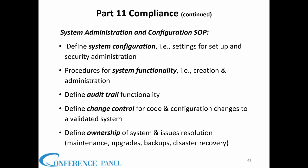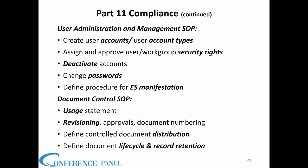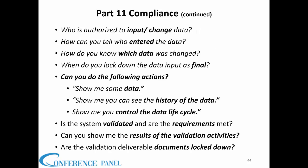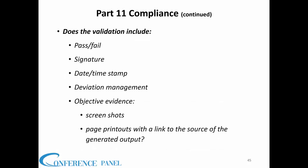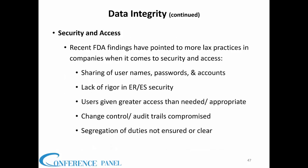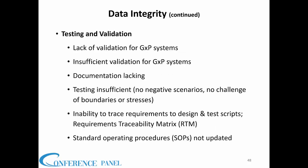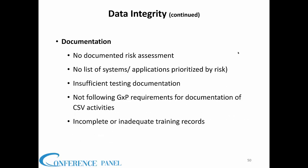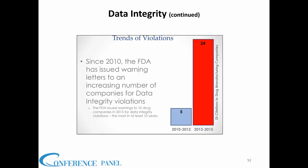System administration and configuration is where you define the system configuration — the settings to set up the system and security administration. User administration and management means creating user accounts or account types, managed under formal change control during inspection. The areas most at risk during inspection are security and access, lax practices, insufficient testing and validation, training and expertise, and lack of a risk-based approach or risk assessment. There was a 380% increase in warning letters from 2010–2012 compared to 2013–2015.